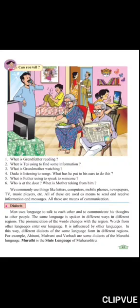In Maharashtra, we speak Marathi. In Punjab, we speak Punjabi. In Pakistan, they talk in Urdu. The pronunciation of a word changes with the region. Words from other languages enter our language and influence it. We listen to another language, try to speak it, and we learn from each other. In this way, different dialects of the same language form in different regions.